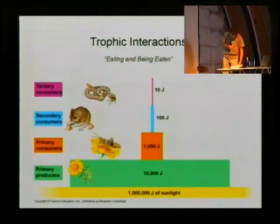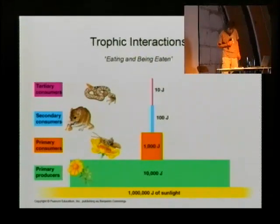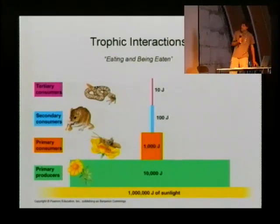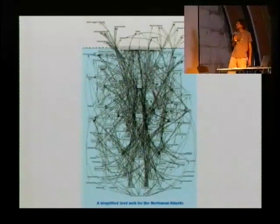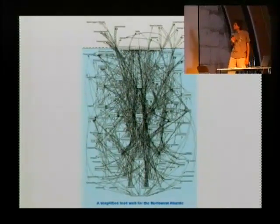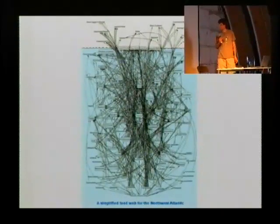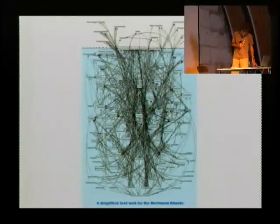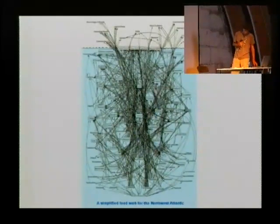And actually at the end, the animal is converted back into matter by all kinds of decomposing organisms. And usually these chains are not as simple as this, they're a bit more difficult. This is a simplified version of an oceanic food web.